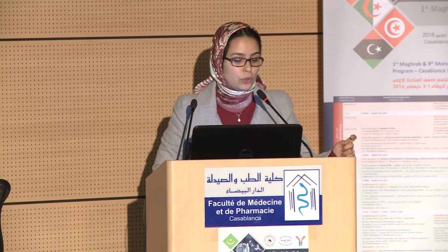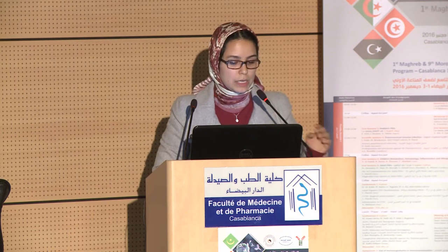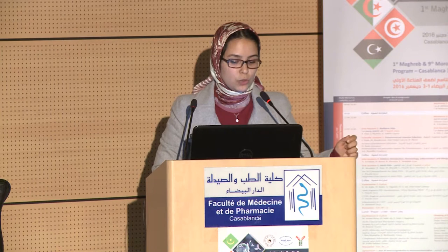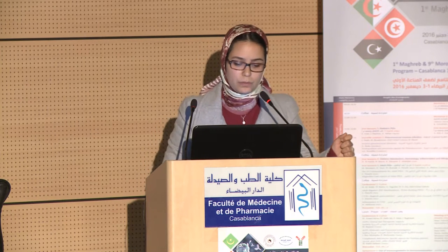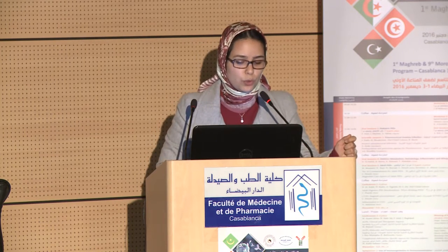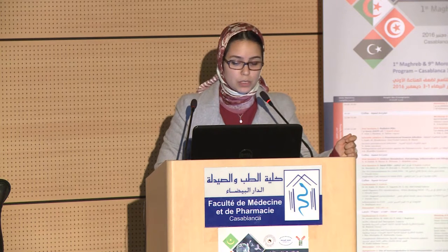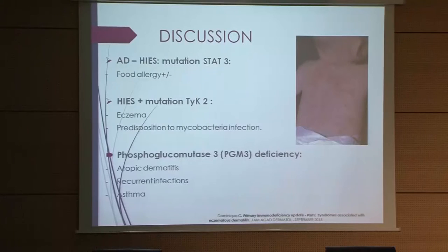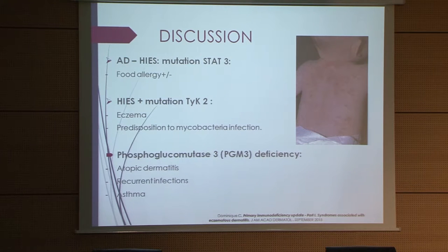The form associated with mutation of TIC2 manifests with eczema and some predisposition to mycobacterial infection. There is also the phosphoglycemia deficiency, described more recently, which is associated with atopic dermatitis, recurrent infections, and asthma.